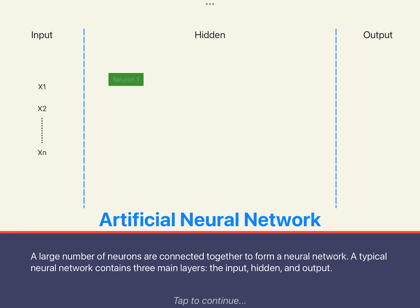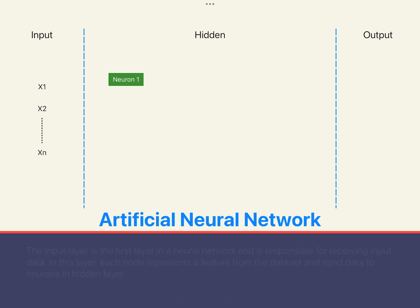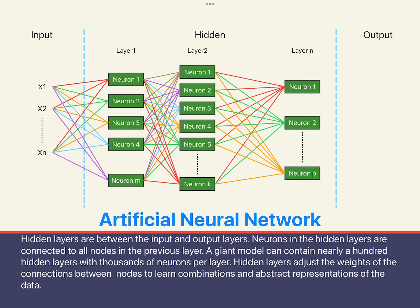The input layer is responsible for data pre-processing, describing the external world with data the neural network can understand. For each feature that needs to be considered, there is a node in the input layer to express it and send the data of this feature to the hidden layer.